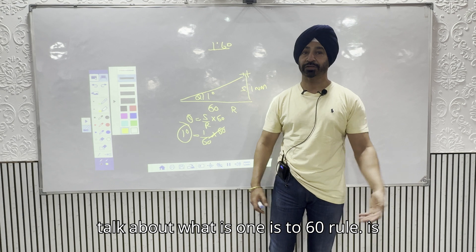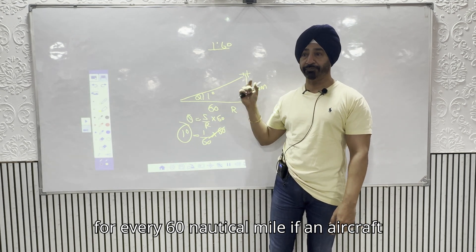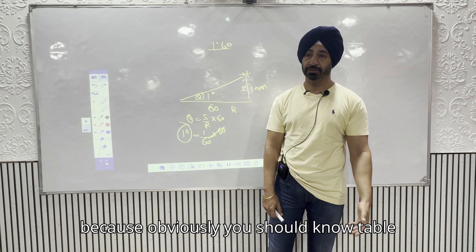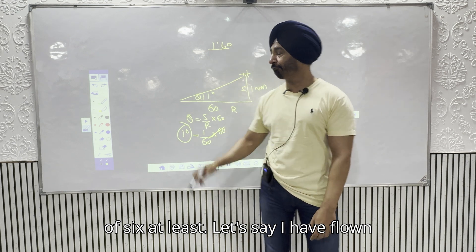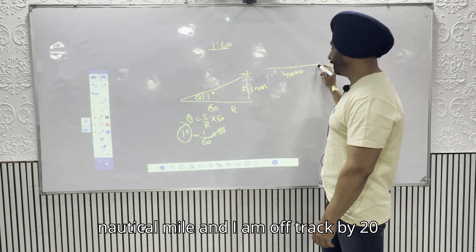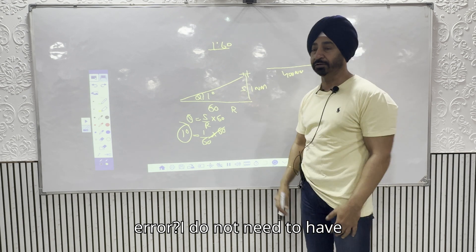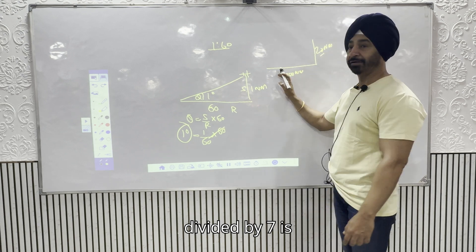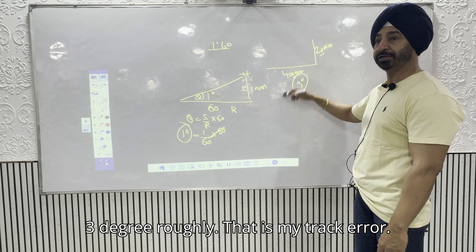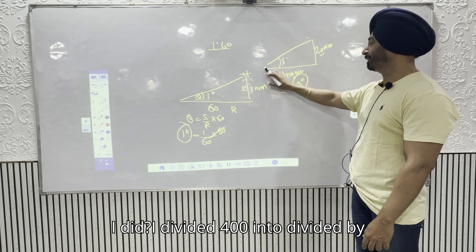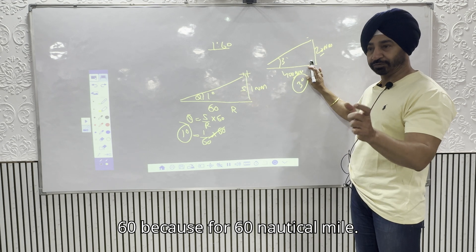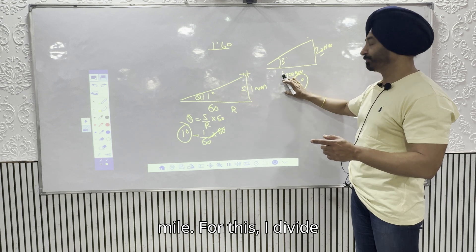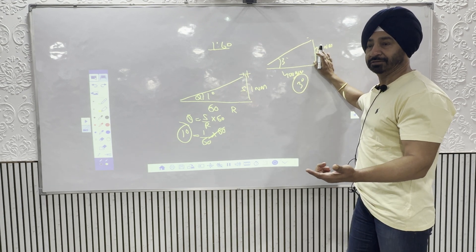You only need to know the 6-times table. For example: if I've flown 400 NM and I'm off track by 20 NM — 6 × 7 = 420, so roughly 7 units — 20 divided by 7 is approximately 3 degrees track error. Another example: 270 NM flown, 37 NM off track — 270 divided by 60 is roughly 4.5, so 37 divided by 4.5 gives about 9 degrees track error. No calculator needed.